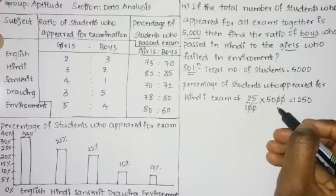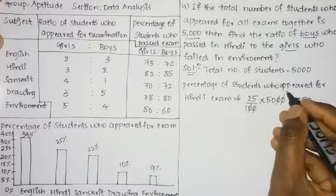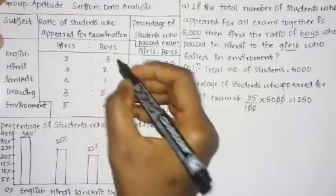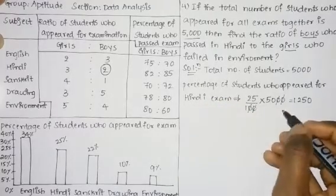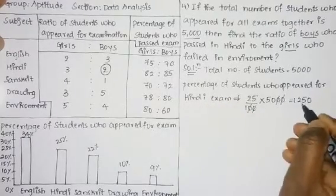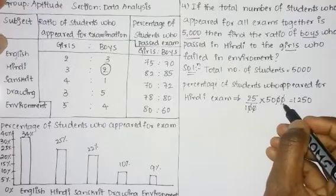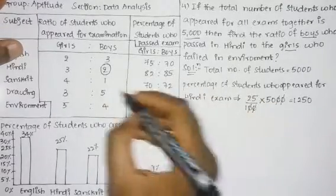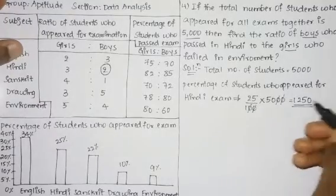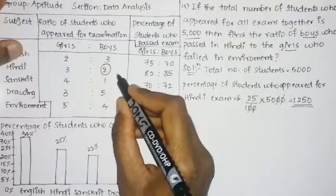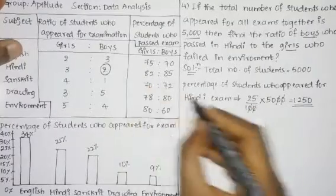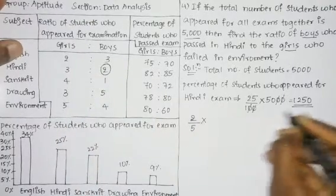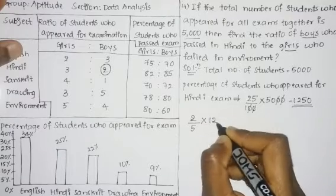Now, the ratio of boys to girls who appeared for the Hindi examination is 2 is to 3. So to find the number of boys, we take 2 divided by the total of 2 plus 3, which is 5, multiplied by 1250.